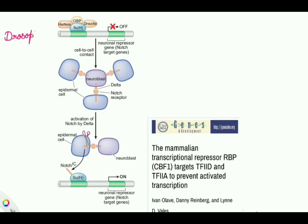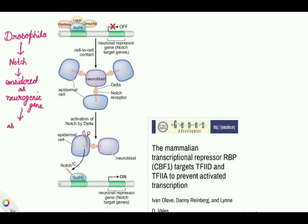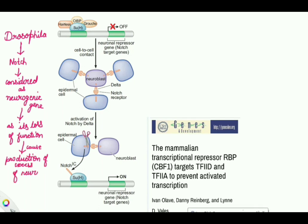In Drosophila, Notch is a very important gene, also considered a neurogenic gene. This is because Notch activation leads to switching on of the neuronal repressor gene. If there is loss of function of Notch, there will be production of far too many neurons in the Drosophila embryo, which is obviously detrimental to normal development — resulting in excess neuron production.